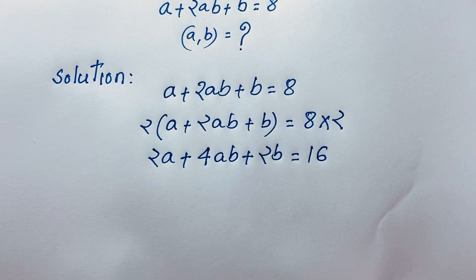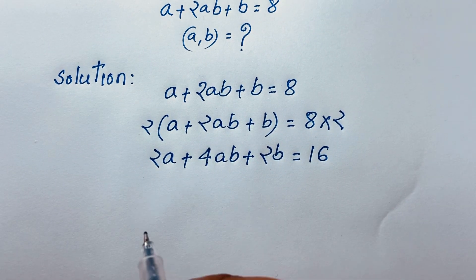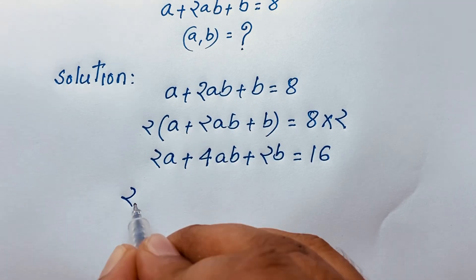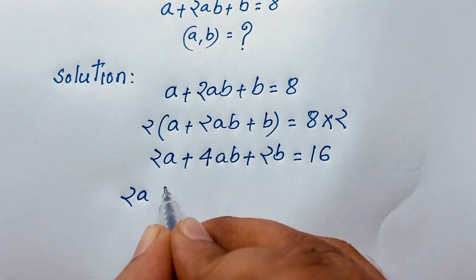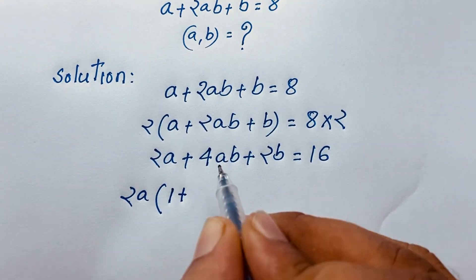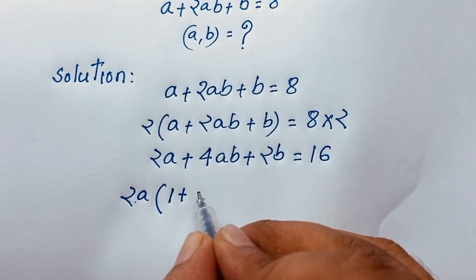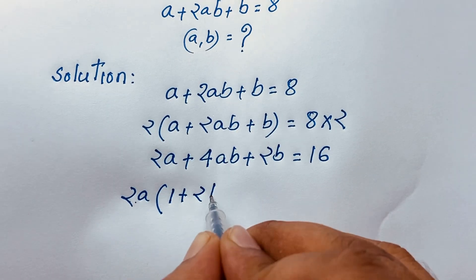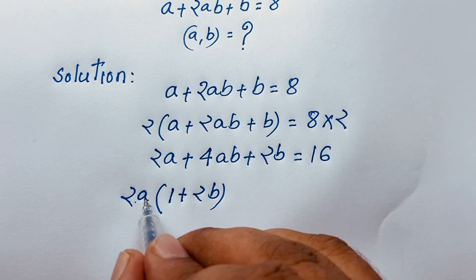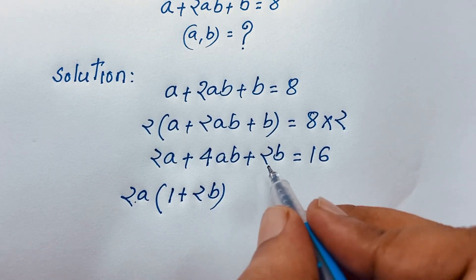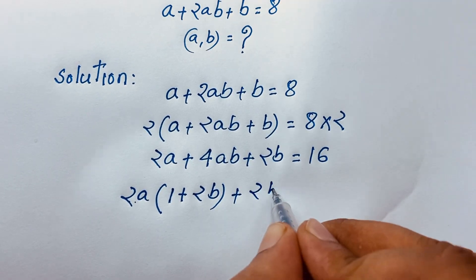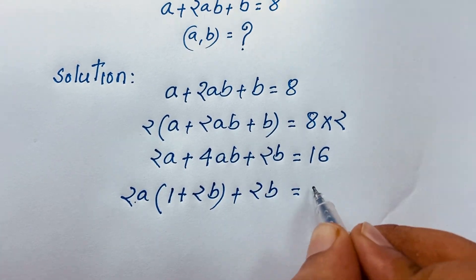Now at this moment you can see that 2A is common, so I take 2A as common. So it will be 2A times (1 plus 2B) plus 2B is equal to 16.